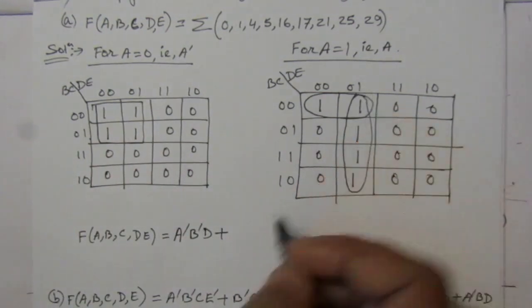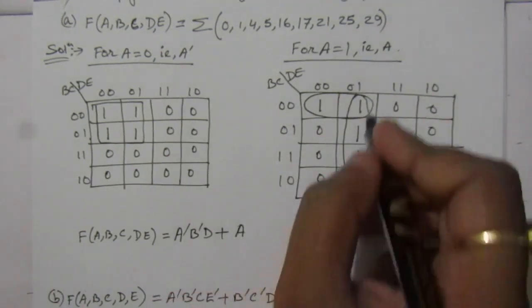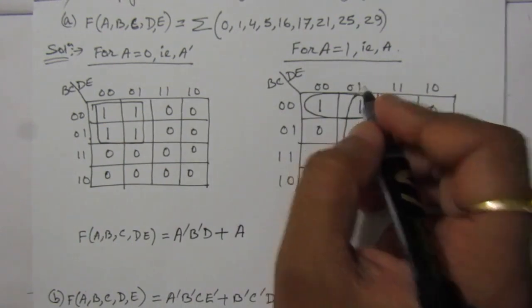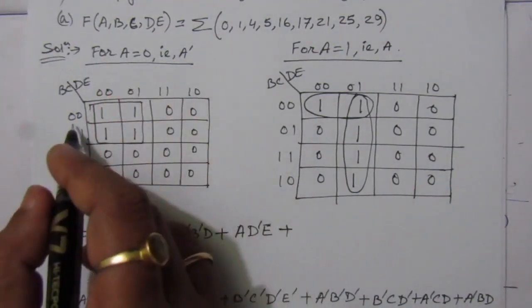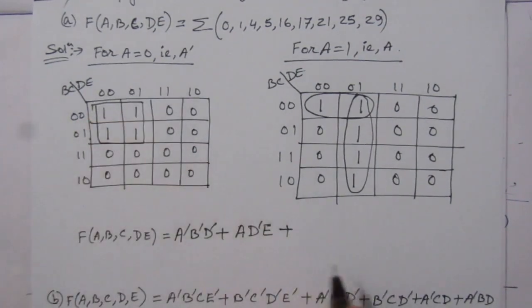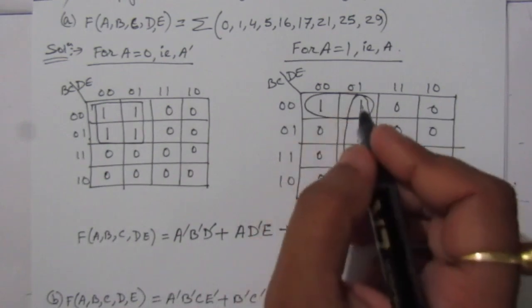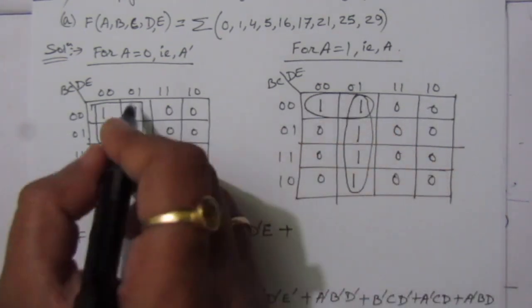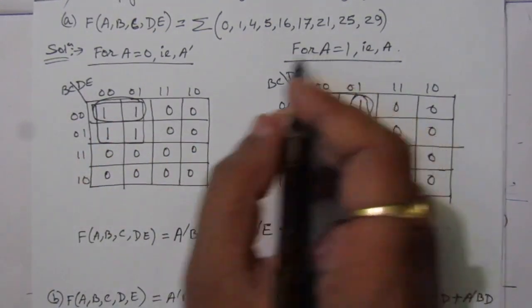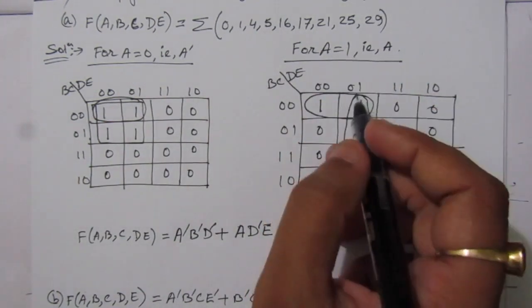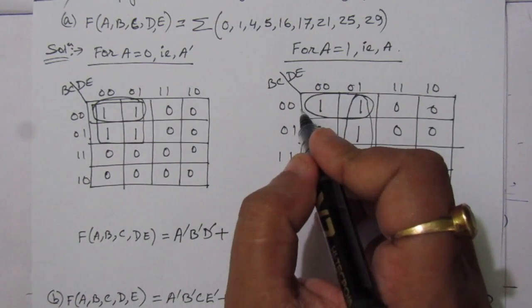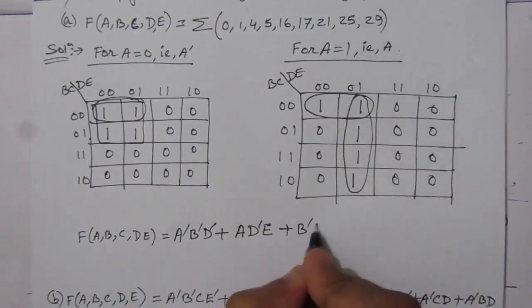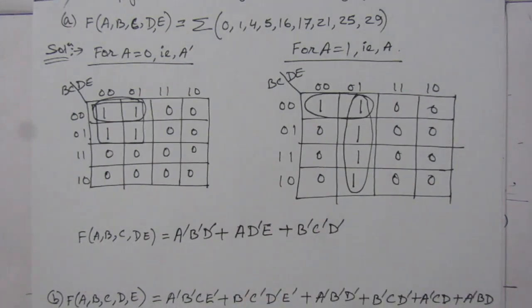From this second table, A is 1, so we write A, and from this combination we get D-bar E, giving us the term A D-bar E. For the first term we have A-bar B-bar D-bar, because D is 0. Then we have A D-bar E. From the third term, since it has both A equal to 0 and A equal to 1, we can cancel A and directly find B-bar C-bar D-bar. So this is the solution of the first part of the problem.